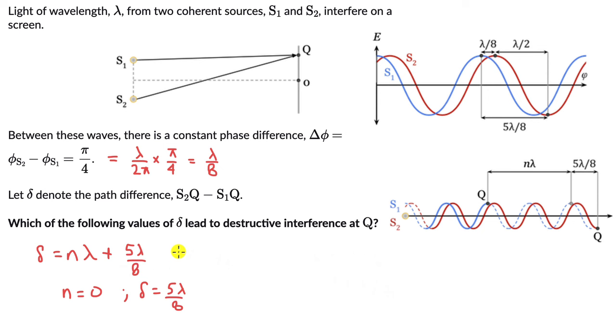Similarly, if we put n equals -1, we will get, and on solving this, -λ + 5λ/8, this will be -3λ/8.